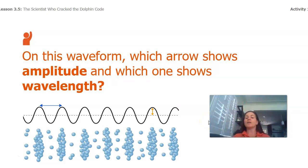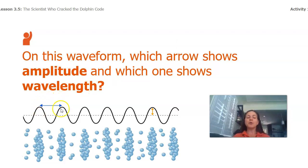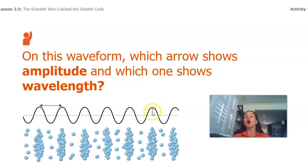So using that, what do you think? Which arrow shows amplitude — blue or orange? Hopefully you said orange, and then that means the blue wave shows us the wavelength, the length from one peak to another. The amplitude is how amplified, how tall the wave is.